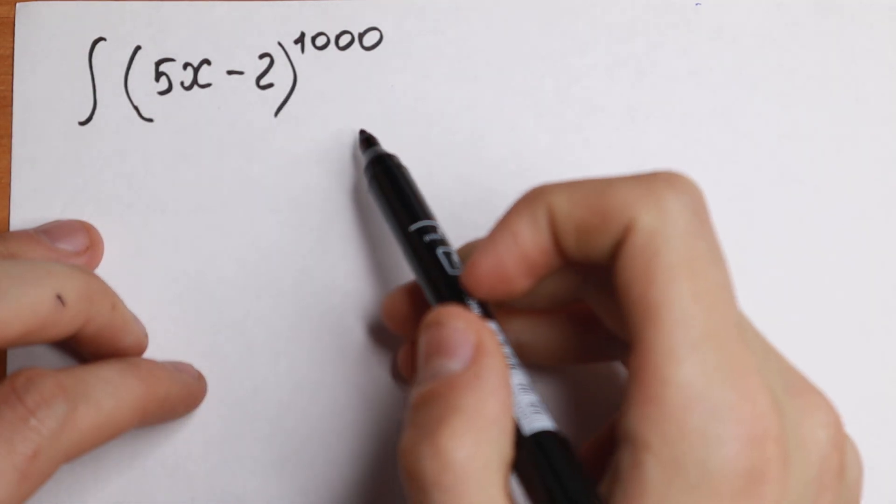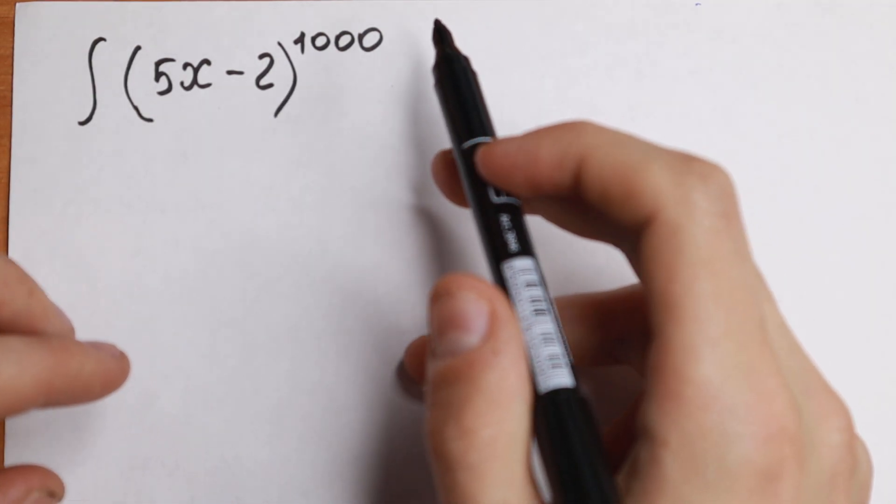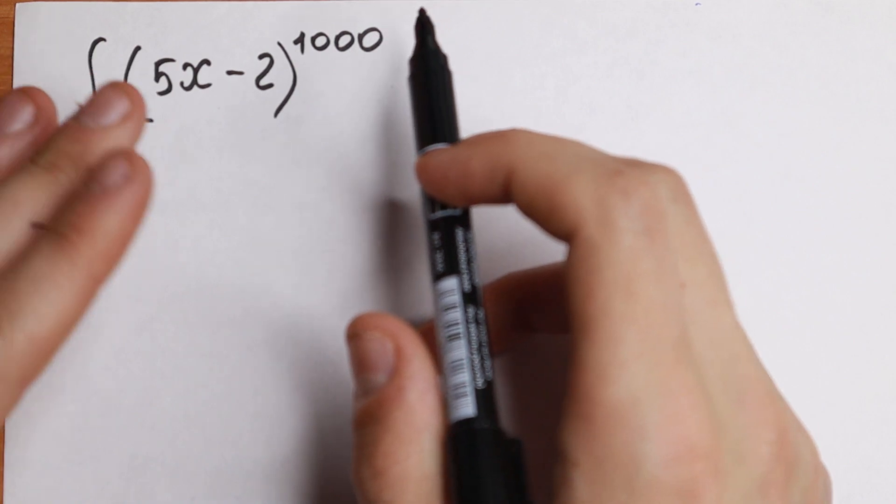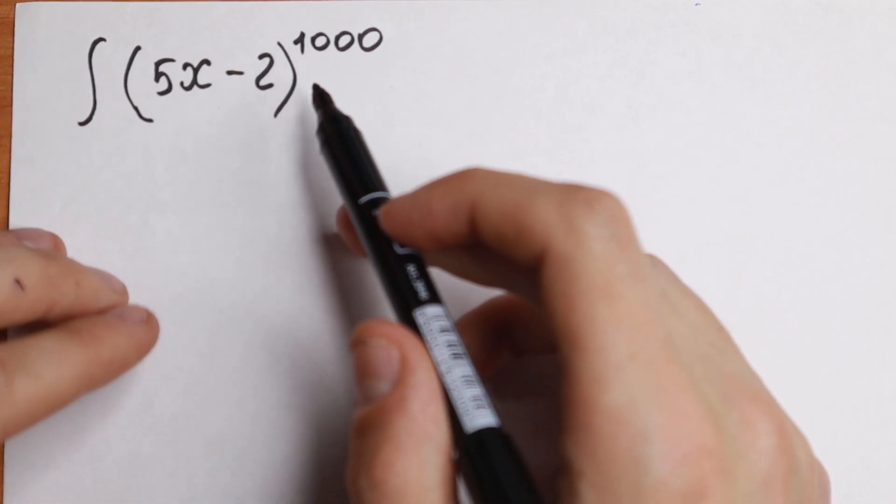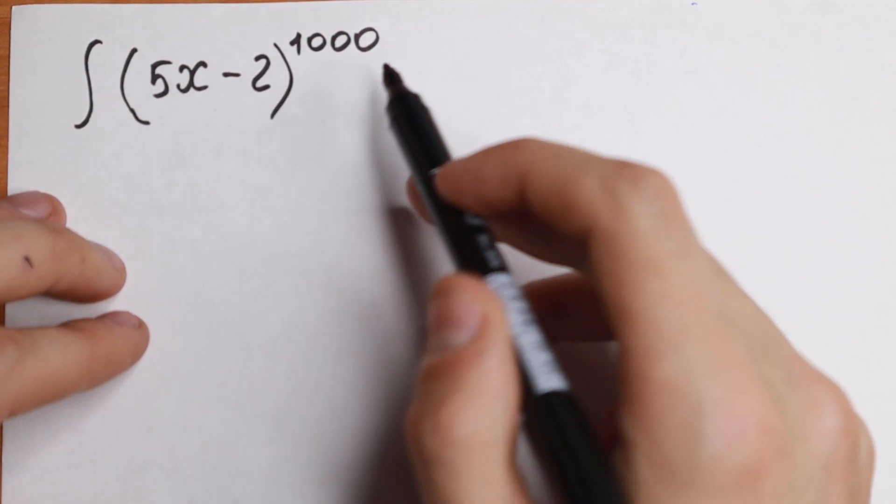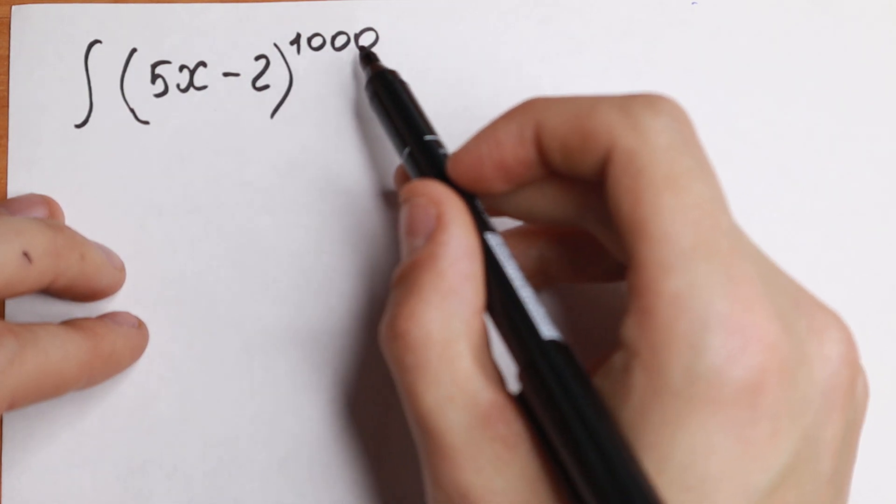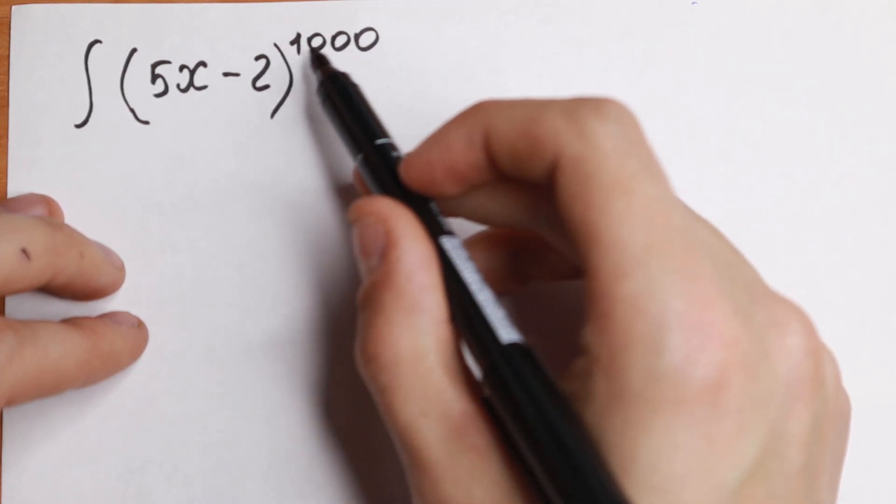Today we have an interesting integral. We have an integral of 5x minus 2 to the power 1000. And on the first sight, this integral is difficult, so we cannot solve it easily. We cannot find this integral in our table because we have a huge power. We have a huge power here, 1000.